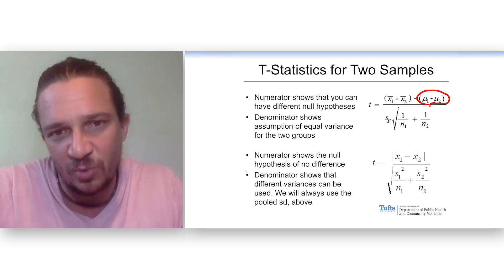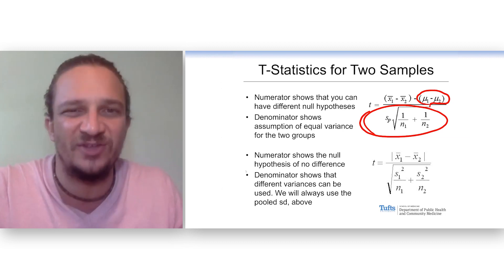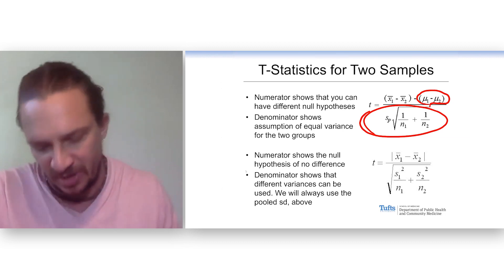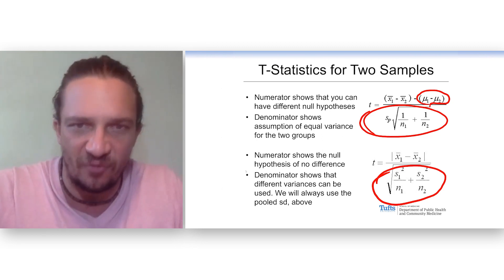The denominator we see, we can calculate variances in two different ways. The top here shows the pooled standard deviation, where we assume that there's equal variance within each group, and the bottom one shows when you use different variances for each group. We'll always use this formula up here at the top.